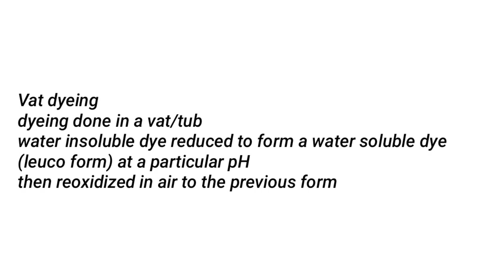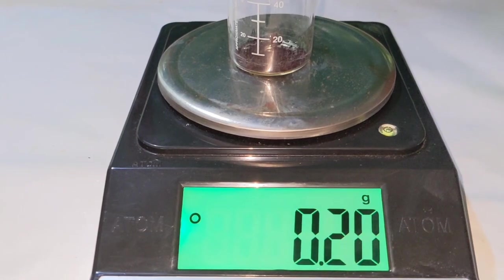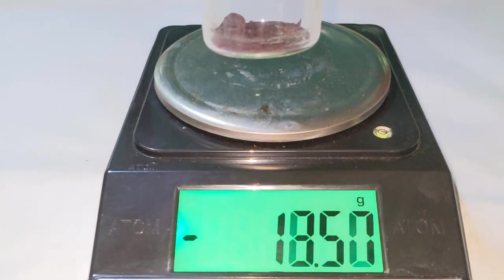Vat dyeing is the term literally referring to dyeing in a vat or tub, and this is the historical method used for dyeing fabric using indigo. The principle behind vat dyeing is that water-insoluble indigo is reduced to form the water-soluble leuco form at a particular pH, and it gets absorbed into the threads of the fabric. It then gets re-oxidized in air to form the original indigo, thereby providing a permanent color.